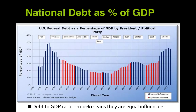When evaluating presidents, you must look at national debt as a percent of GDP, not just the raw debt figure. A 100% debt-to-GDP ratio means they are equal influences — that's where we were going into 2016. The Great Depression of the 1930s and the Great Recession of the 2010s both caused our national debt to increase because of downturns in gross domestic product. We're starting to see some reversals in that trend. Thank you for taking these notes.